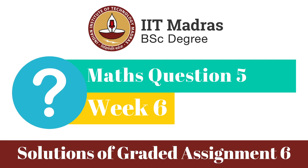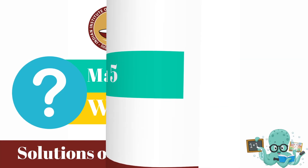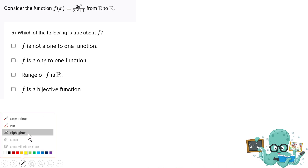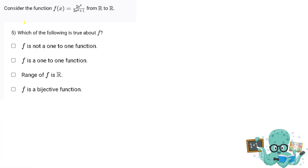This is question number five of assignment six. The question asks us to find which of the following are correct about the function — specifically regarding whether it is a one-to-one function, the range of the function, and whether it is bijective or not.